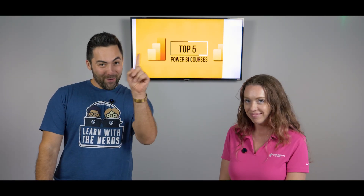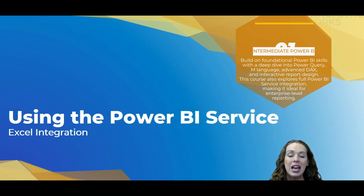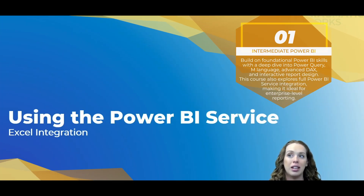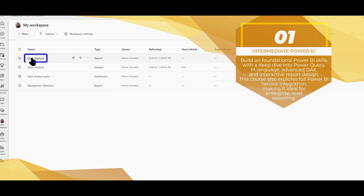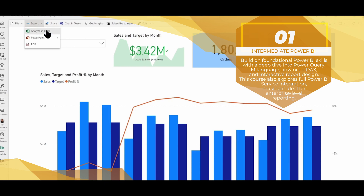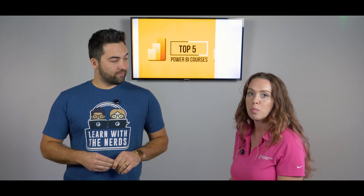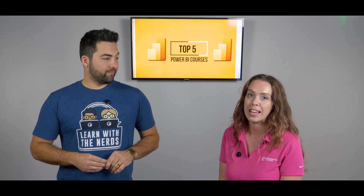Number one: Intermediate Power BI. You should 100% take Beginner Power BI before this course. These five courses are about leveling up your game. Intermediate Power BI is about six hours, but they're pretty short modules and each one has great nuggets that will really help you level up your Power BI skills — all the way from the very first phase of the Power BI lifecycle, all the way to publishing and working with your data on the web.